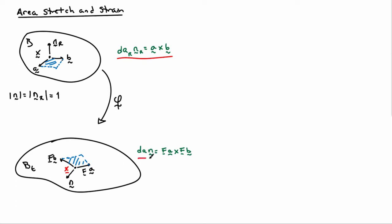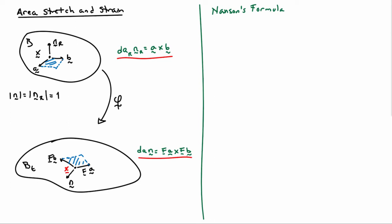What makes writing the areas as these oriented areas with the normal vector useful is a formula known as Nansen's formula. Nansen's formula relates the oriented areas to each other and tells us that da n equals jf inverse transpose nr dar. Recall that j is simply the determinant of f. This is a handy geometric fact to know about.